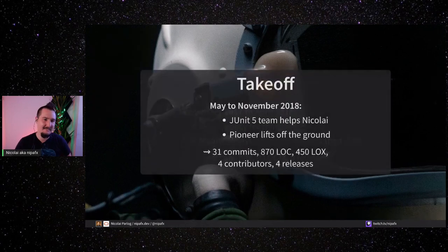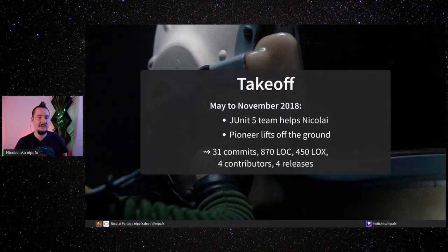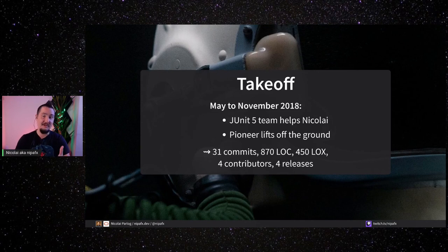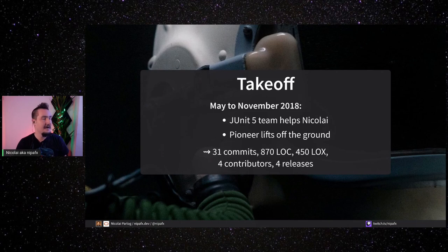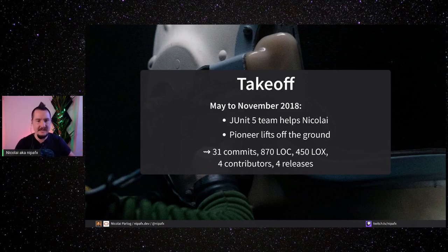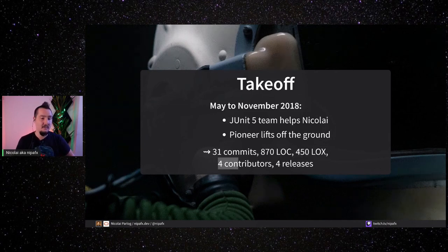In May 2018, the JUnit 5 team said they kind of liked our project and could we maybe do something with it. So they helped me get it off the ground. Steve Brennan, Christian Stein, and Mark Philip all three contributed to the code base. We set up releases and everything. We gained almost a thousand lines of code, a bunch of configurations, more contributors, and actual real-life releases. That was when the project took off. But then, once again, it went into a slump — I didn't have much time, and when I did, I felt bad that I hadn't been working on it. There were phases where nothing happened and I didn't feel good about it.